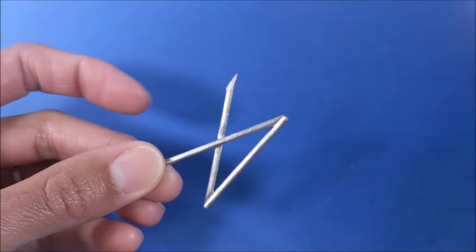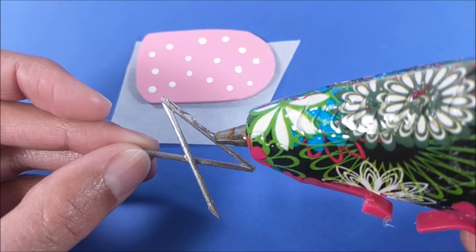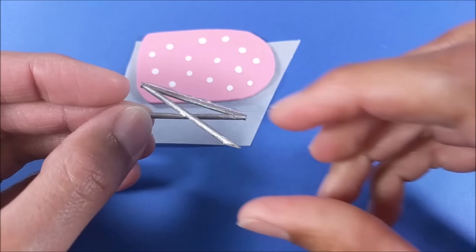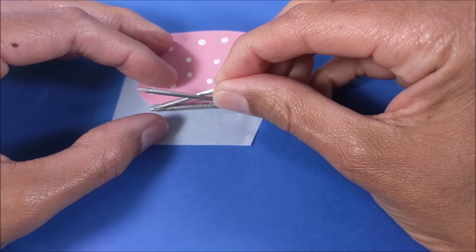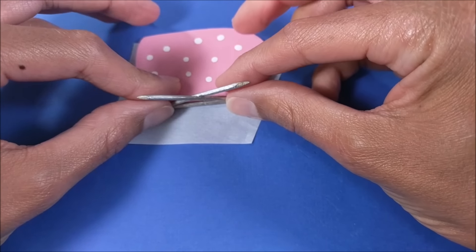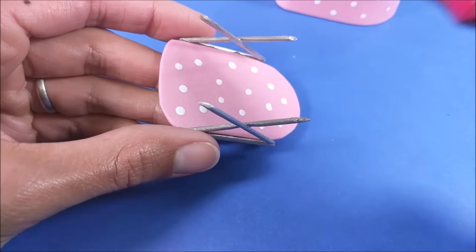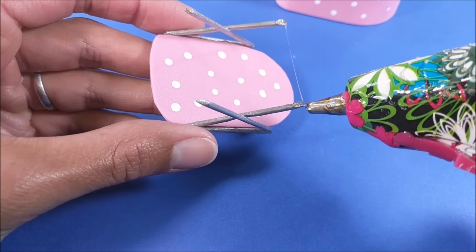I give it plenty of time to dry, then glue to the sides. And when that dries I glue my other section to the top.